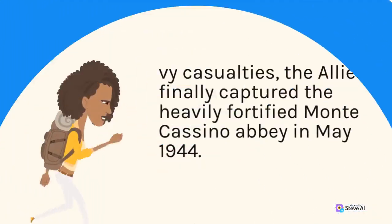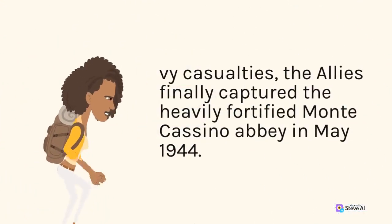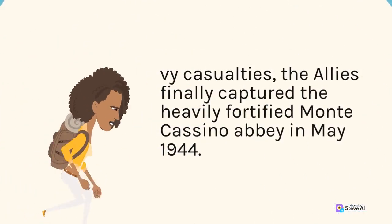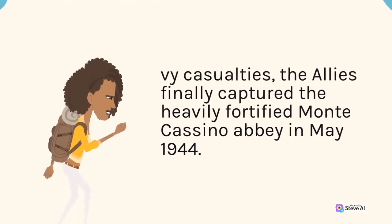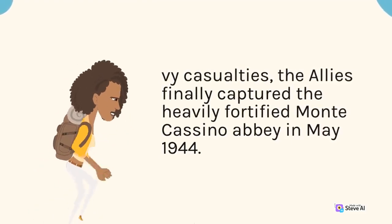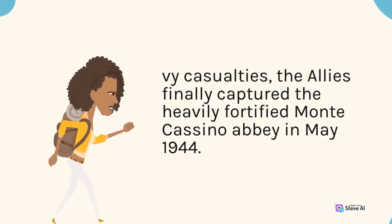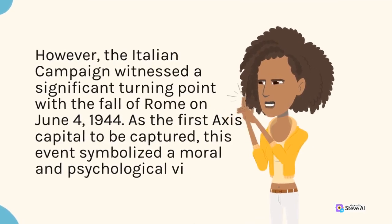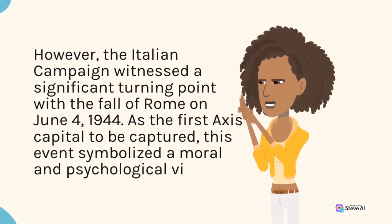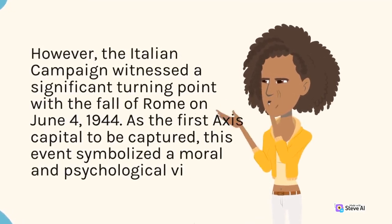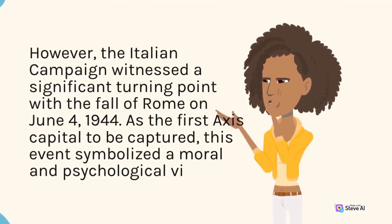After months of heavy casualties, the Allies finally captured the heavily fortified Monte Cassino Abbey in May 1944. The Italian campaign witnessed a significant turning point with the fall of Rome on June 4, 1944.